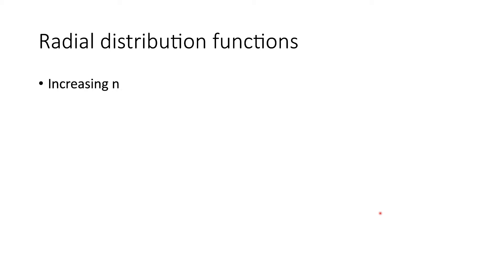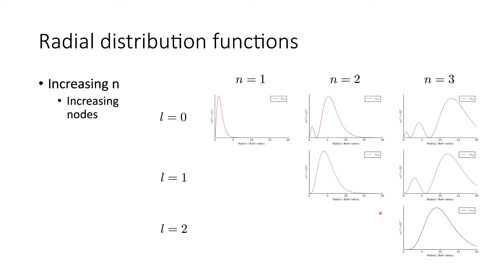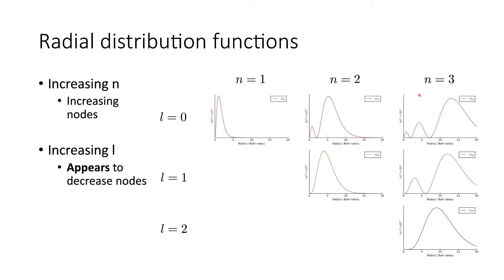Going back to our radial distribution functions, increasing n — the principal quantum number — increases the number of nodes. For l=0 (s orbitals): the 1s has a single peak, the 2s has two peaks with one radial node, and the 3s has two radial nodes. For l=1 (p orbitals): there's no 1p solution, the 2p shows no radial nodes, and the 3p has one radial node. For l=2 (d orbitals): the 3d shows no radial nodes. Increasing l appears to decrease the number of radial nodes — for n=3, it's two nodes for s, one for p, and none for d.